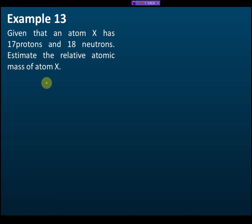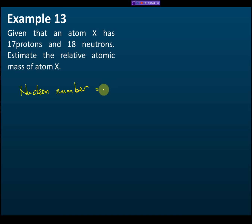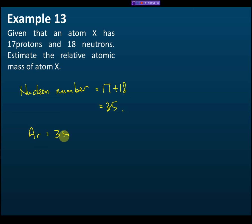Example 13: An atom X has 17 protons and 18 neutrons. Estimate its relative atomic mass. The nucleon number equals 17 plus 18 equals 35. Therefore, the relative atomic mass is approximately equal to 35.